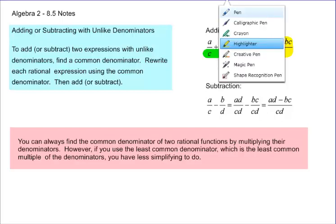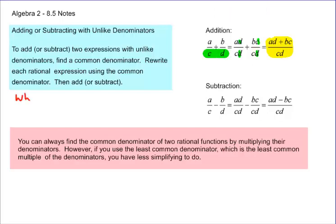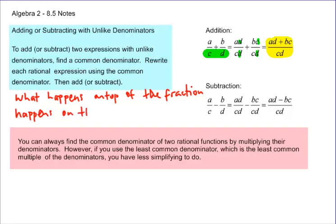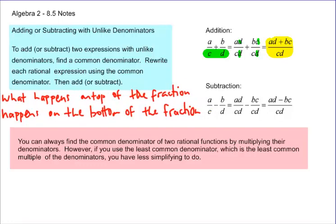Keep this in mind — there's one simple rule to always remember: whatever happens on top of the fraction happens on the bottom of the fraction. As you're working these things out, don't forget that what you do on top, you have to do on the bottom. You can always find the common denominator of two rational functions by multiplying their denominators. However, if you use the least common denominator — the least common multiple of the denominators — you have less simplifying to do. So there are two different ways to do this, and if you can simplify first, it'll make it easier in the end.